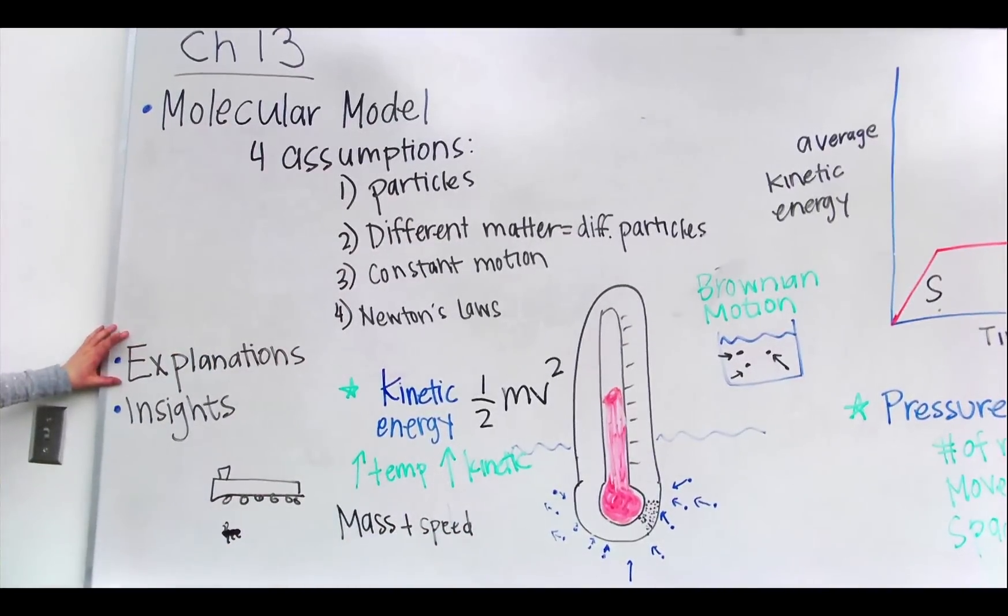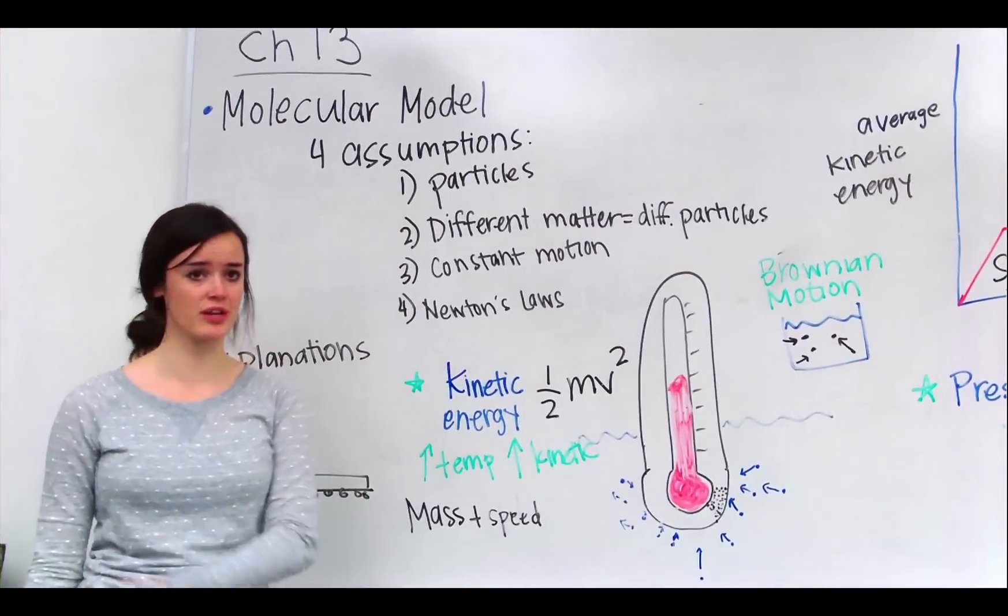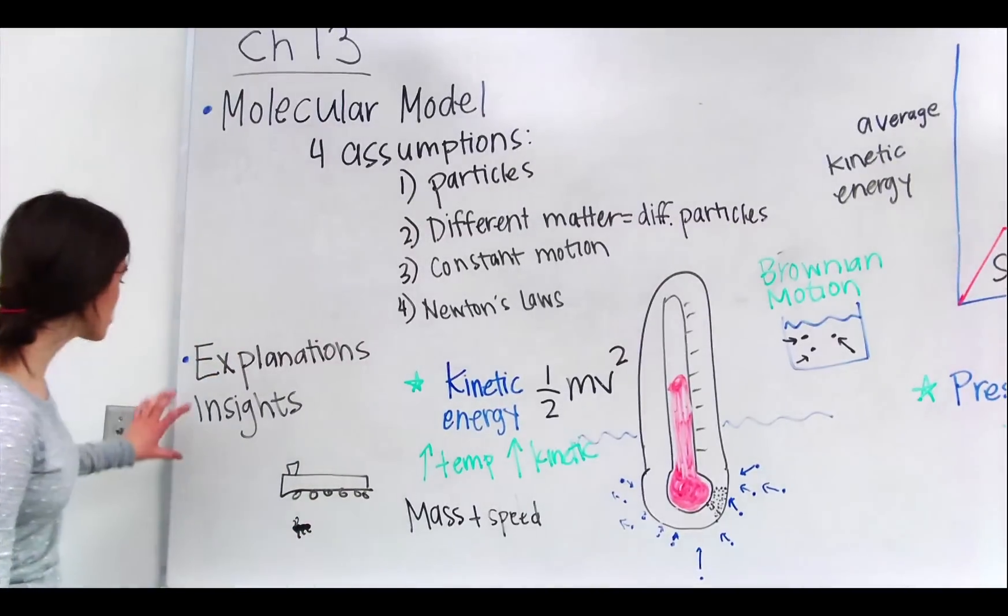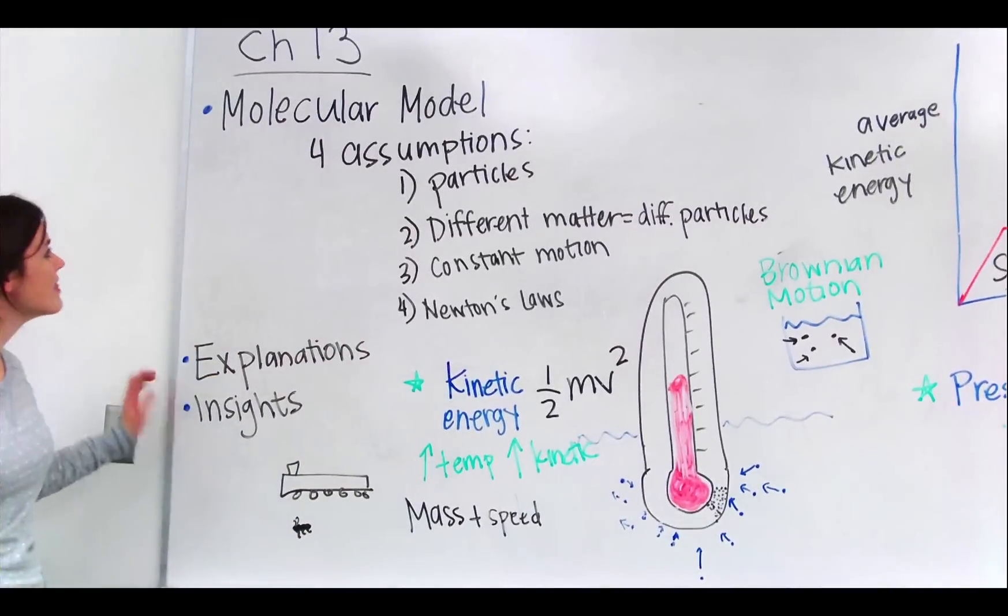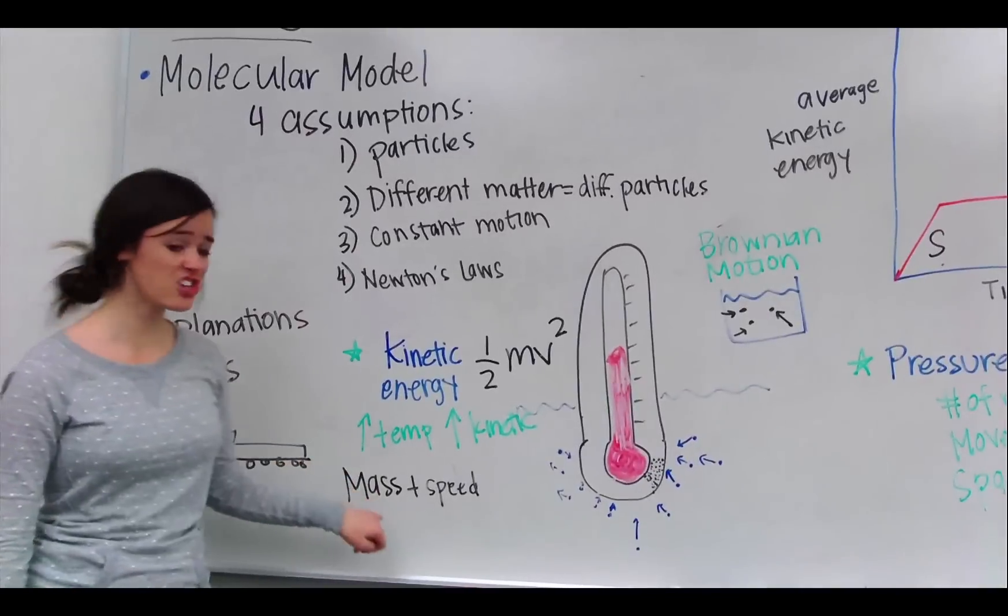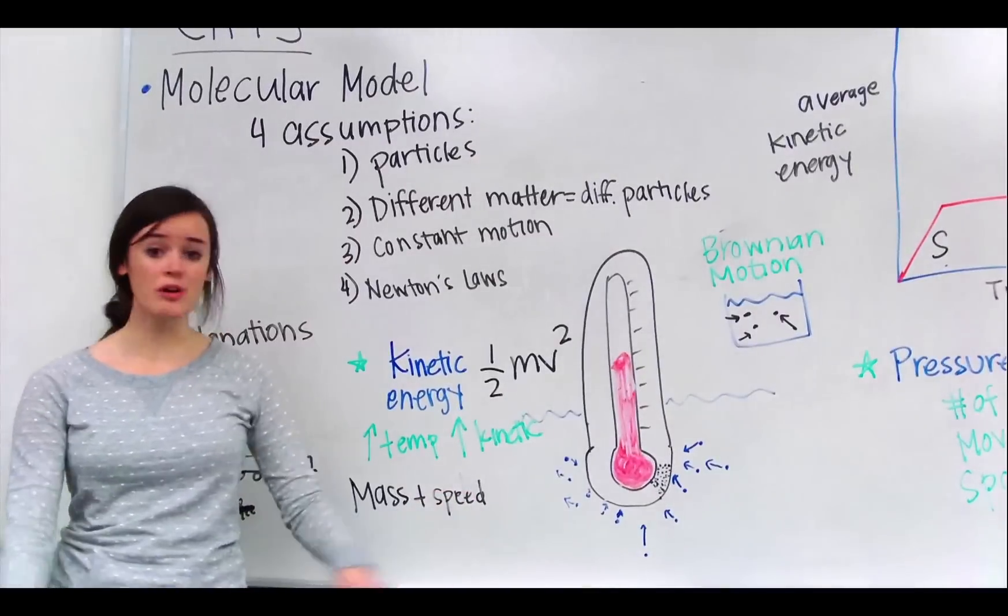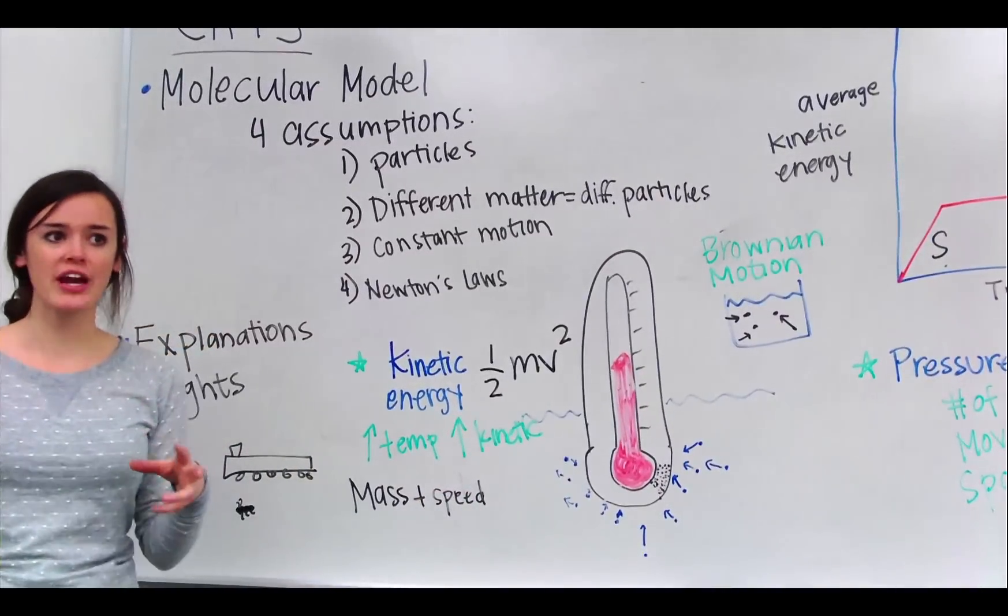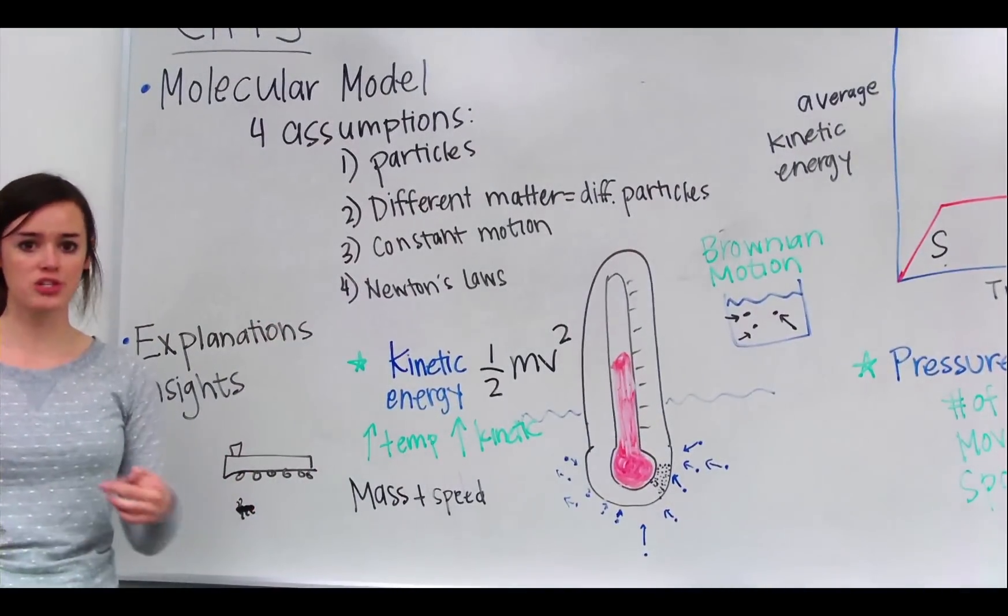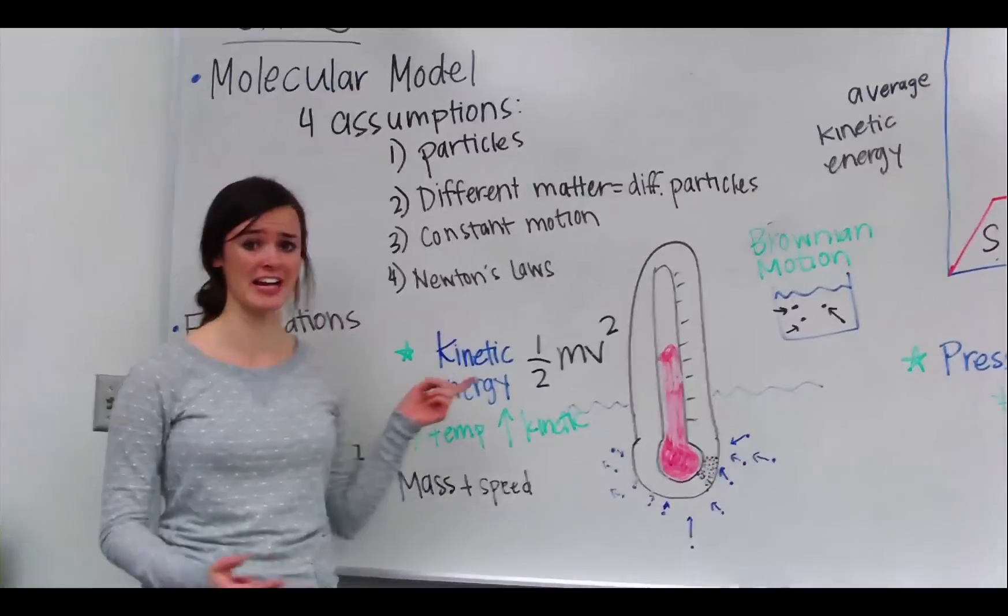Okay, so this helps to explain a lot of stuff that we went over the last chapter, like solids, liquids, gases, their different densities and the different properties that they carry. So there's a lot of insights that this model gives us. We're going to start off with kinetic energy. Now kinetic energy, you can see down here, is a combination of mass and speed. So if you have a greater mass, you're going to have a greater kinetic energy. Also, if you have a greater speed or velocity, which is speed plus direction, you're going to have a greater kinetic energy.